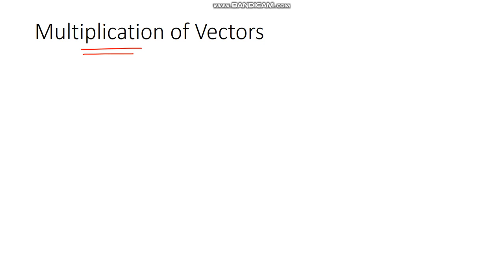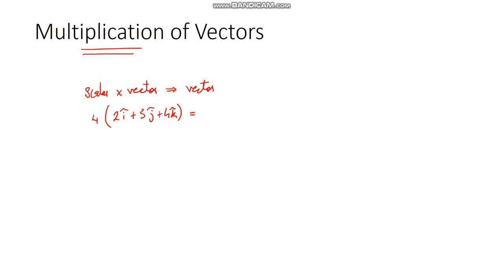Now, you can have a scalar multiplied by a vector — your answer will also be a vector. Let us take an example: let us say a scalar quantity 4 and a vector 2i + 3j + 4k. When you multiply this, what you will get is 8i + 12j + 16k.